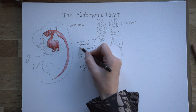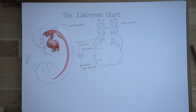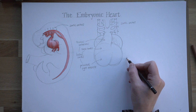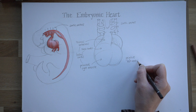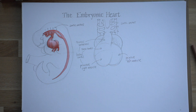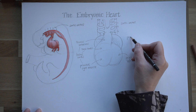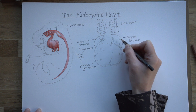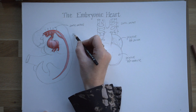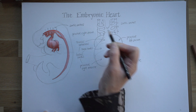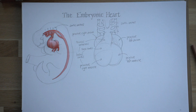We're starting to see some definitive heart anatomy beginning to emerge. Over on the left-hand side, the primitive ventricle of the heart tube is now the primitive left ventricle. And from that original common primitive atrium, we've now got a right atrium and a left atrium, although at the moment they are incompletely divided.